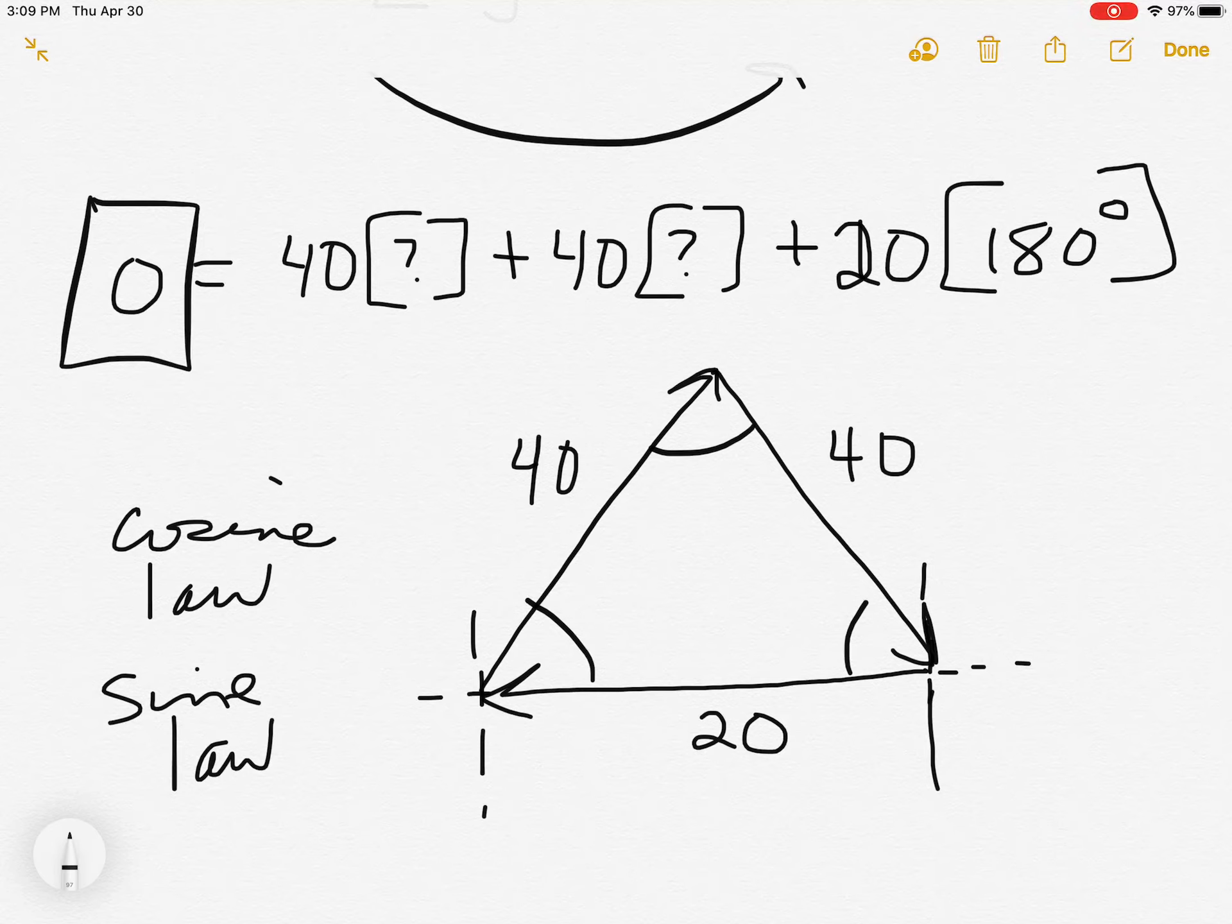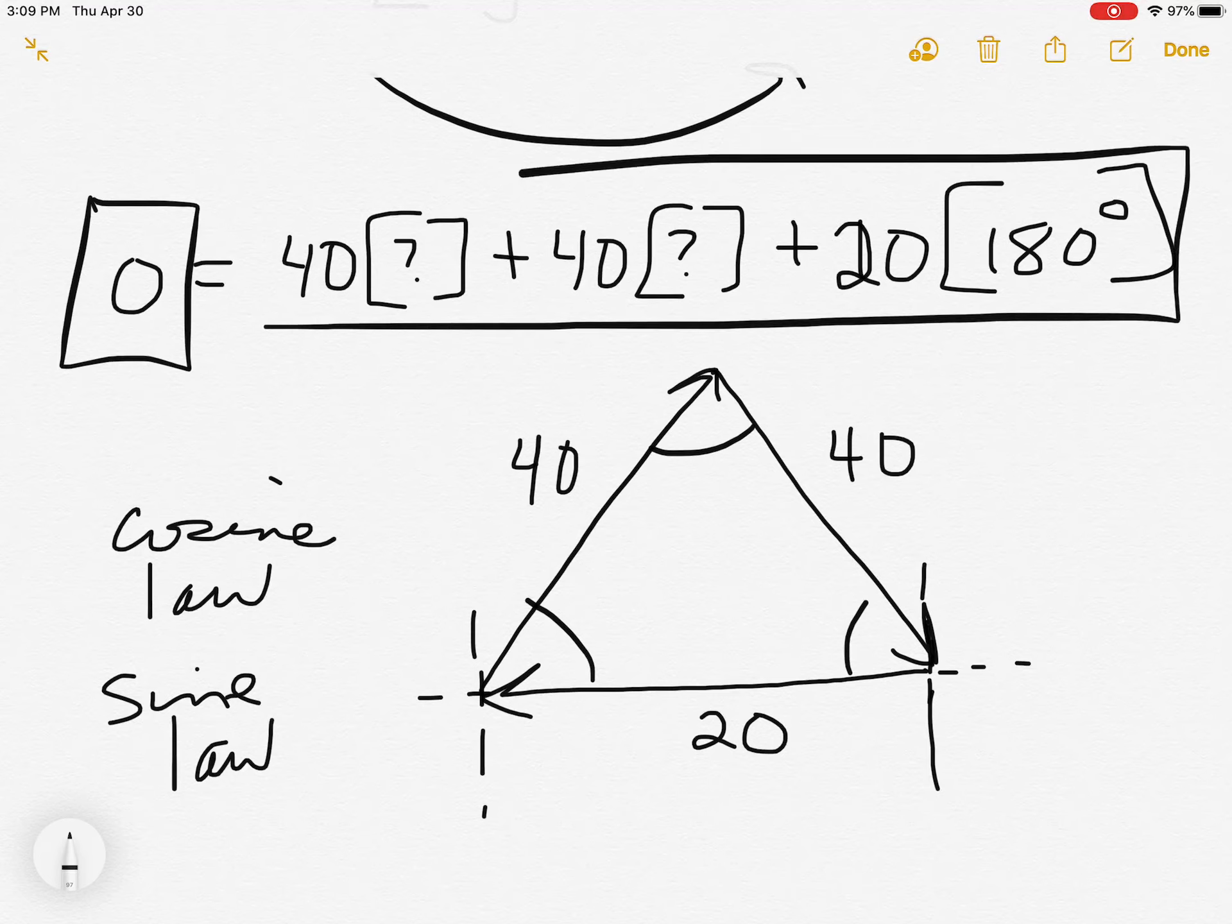And once I figure those out, I will now know the directions that I need to use for each of those 40 sides. So the trick here is to draw it like this, set it up, use your sine and cosine law here to figure out what the directions will be.